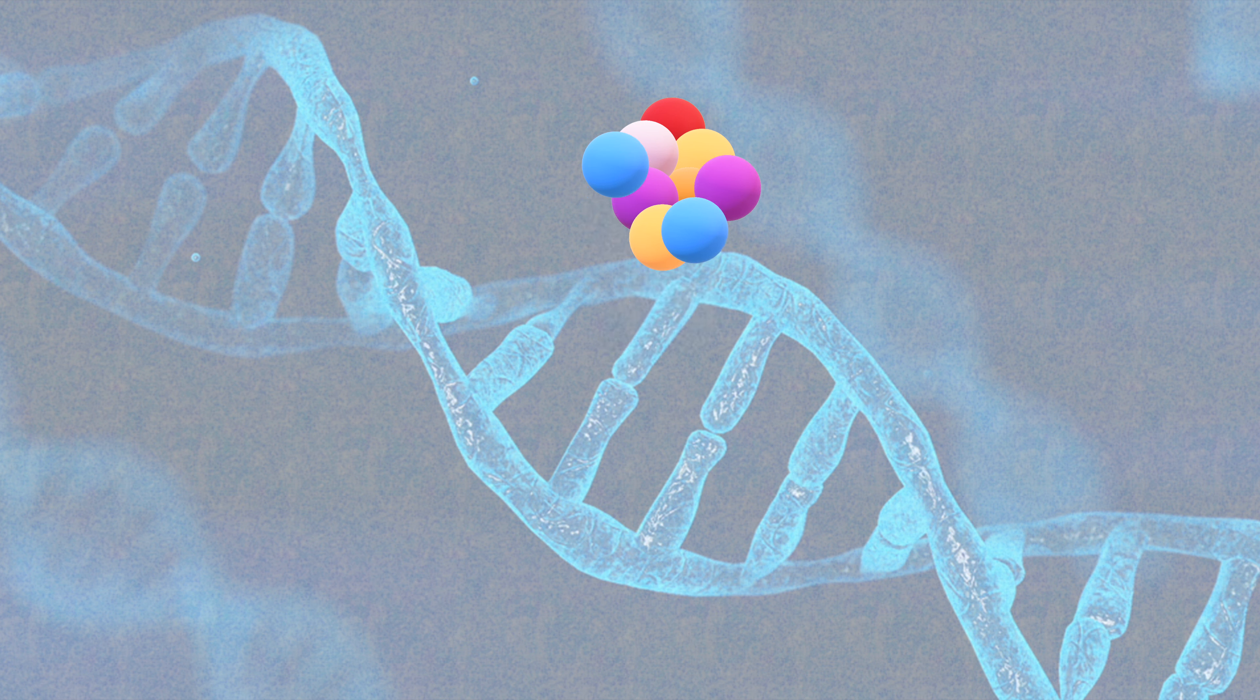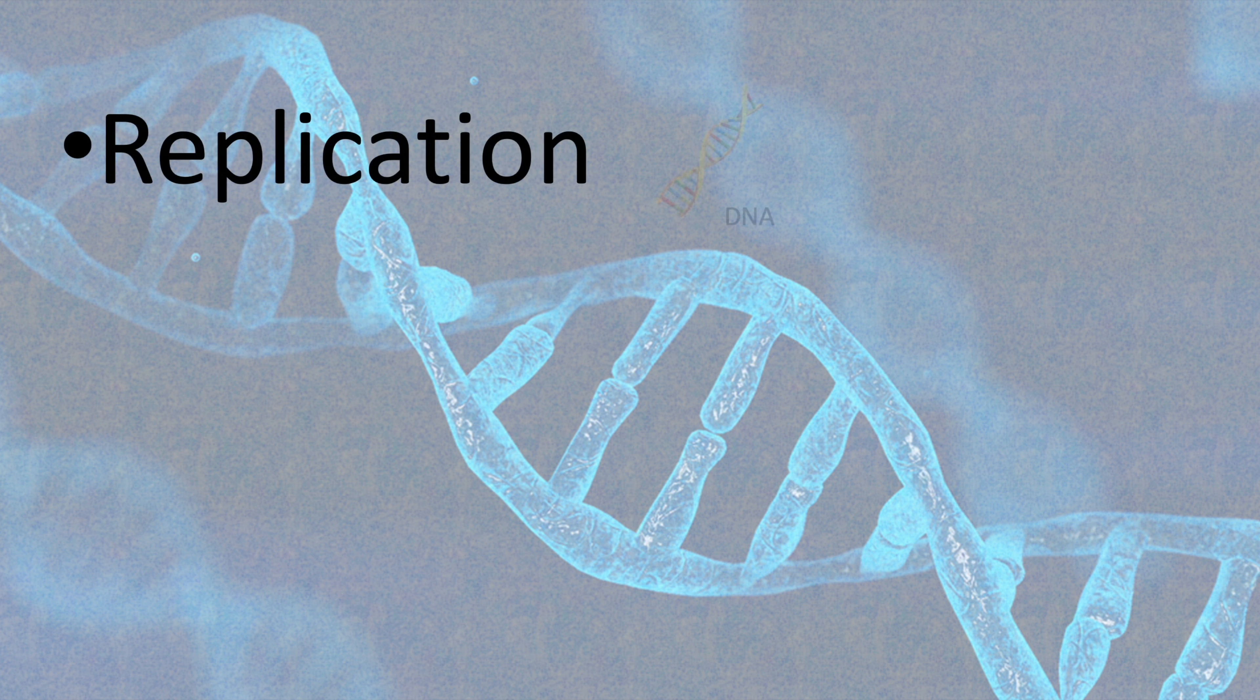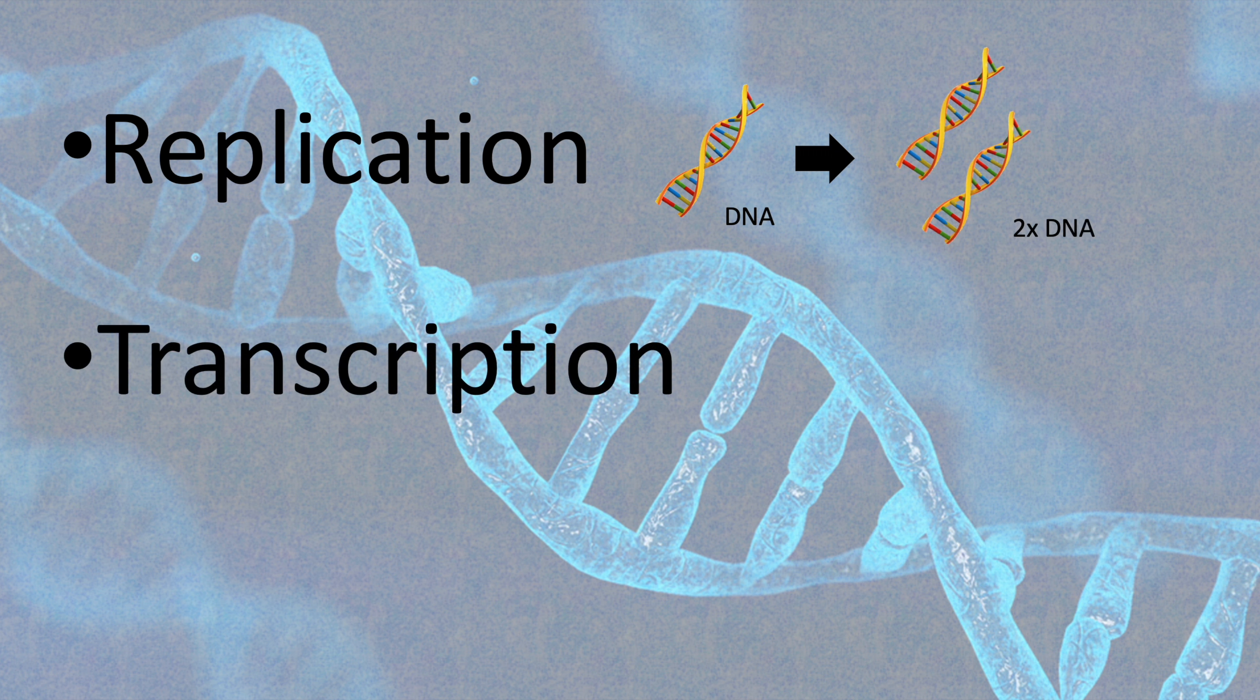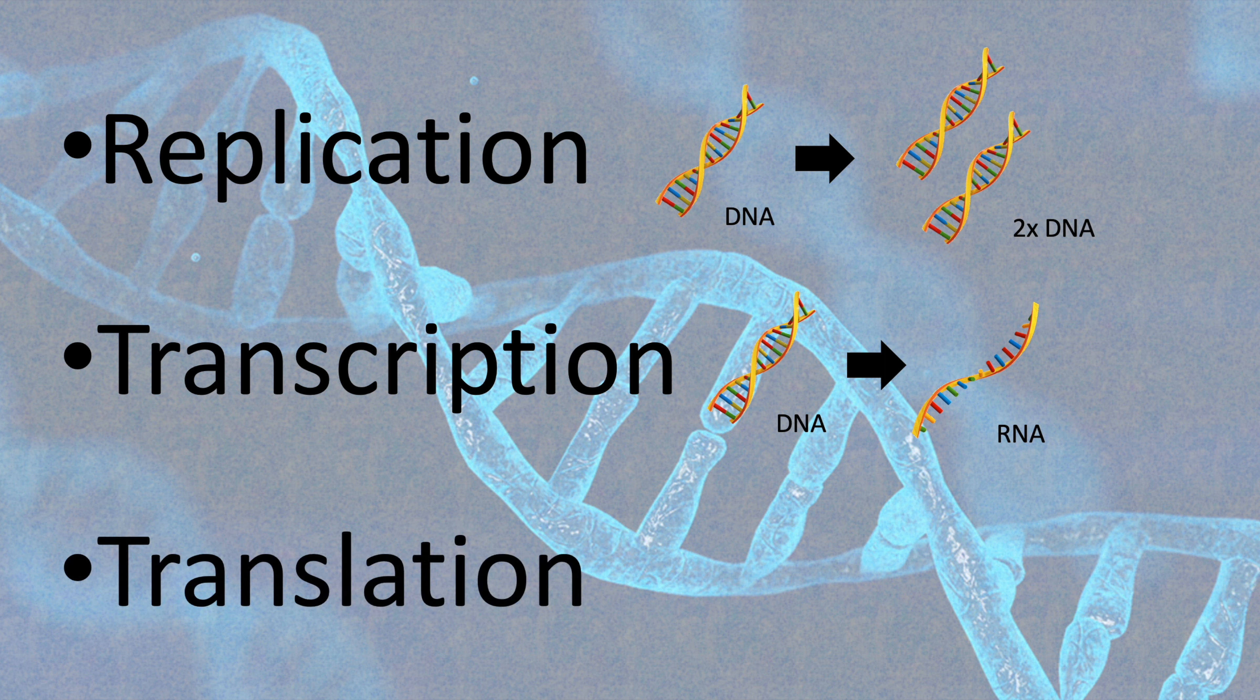To sum up, there are three important processes in which genetic material is involved. Replication, where DNA is copied. Transcription, where DNA is copied into RNA. And translation, a process where proteins are synthesized out of RNA's information.